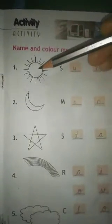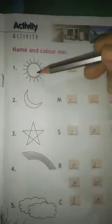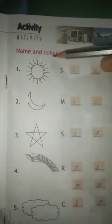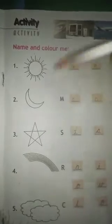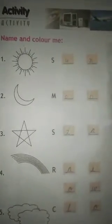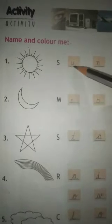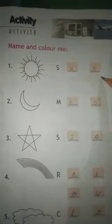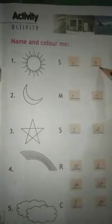There are different pictures you have to name these pictures and color it. Number one we have Sun, so we'll fill in these blanks S-U-N Sun, and you'll put color in this Sun.